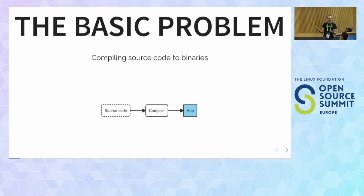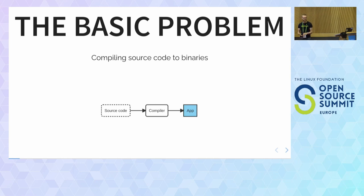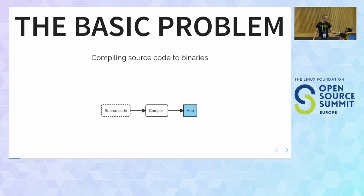The basic problem we've had since the 1950s is this: we have some source code — maybe it's written in Fortran — and we want to produce binaries that we can run on a computer, so we have to run a compiler. So far, so easy, but nothing stays simple in software for long.